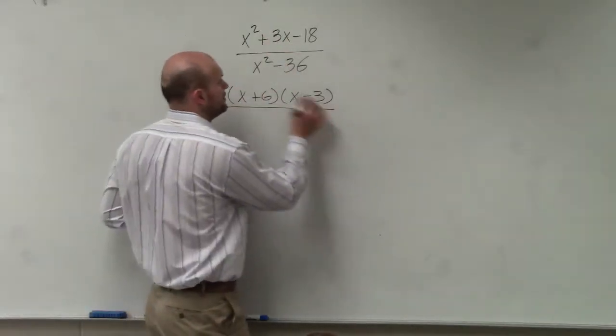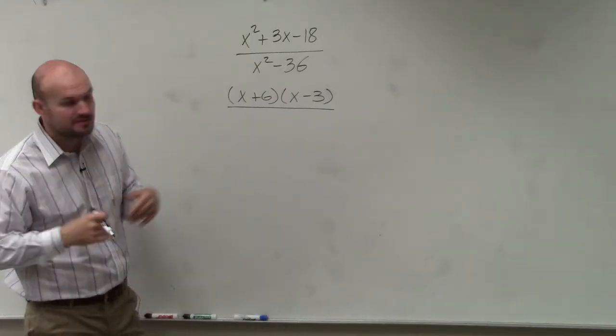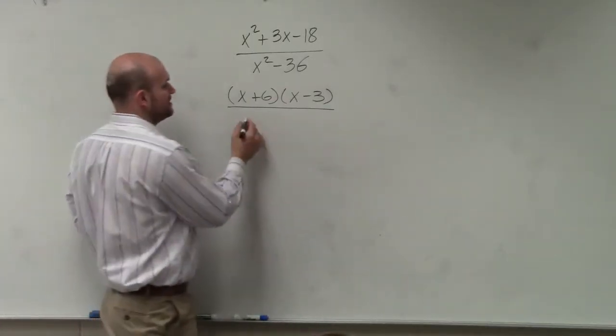Then over here, I have x squared minus 36. That's a difference of two squares, would be x minus 6, x plus 6.